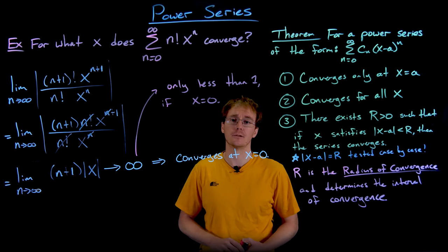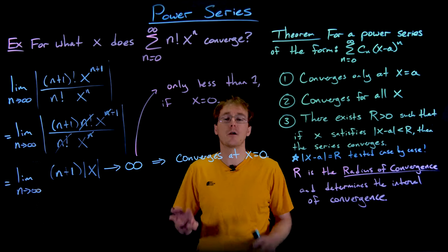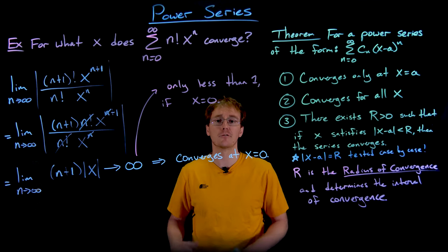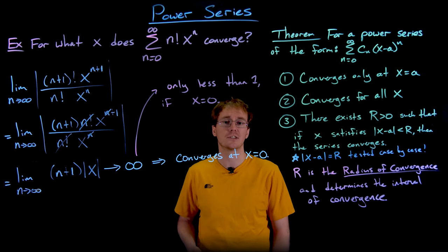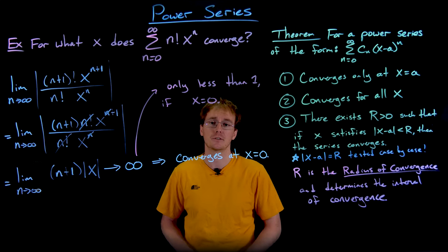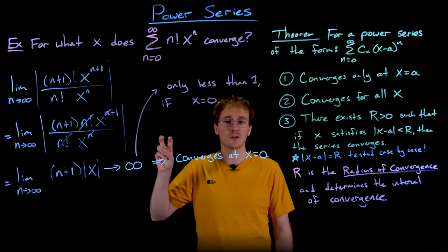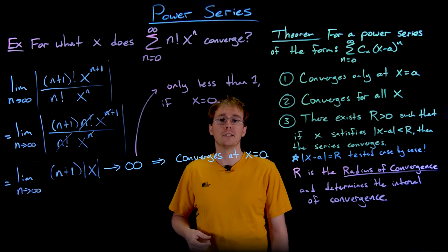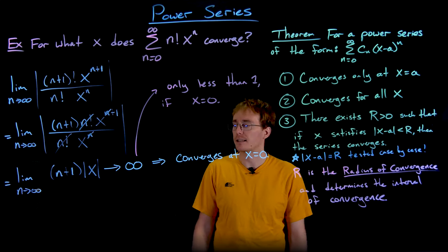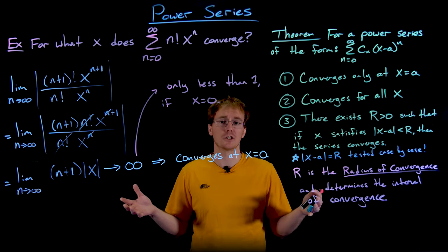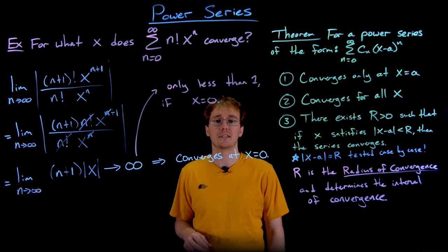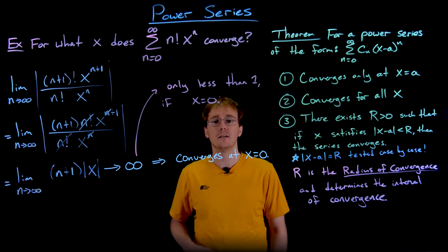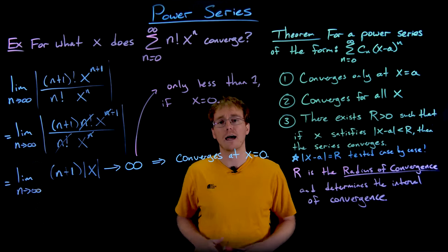This isn't a very useful power series. It's worth noting that the limit from the ratio test is actually the reciprocal of the radius of convergence. If our limit goes to infinity, the radius of convergence is 1 over infinity, which is 0. Conversely, if the ratio test limit goes to 0, the radius of convergence is infinite, meaning the series converges for all real x values.